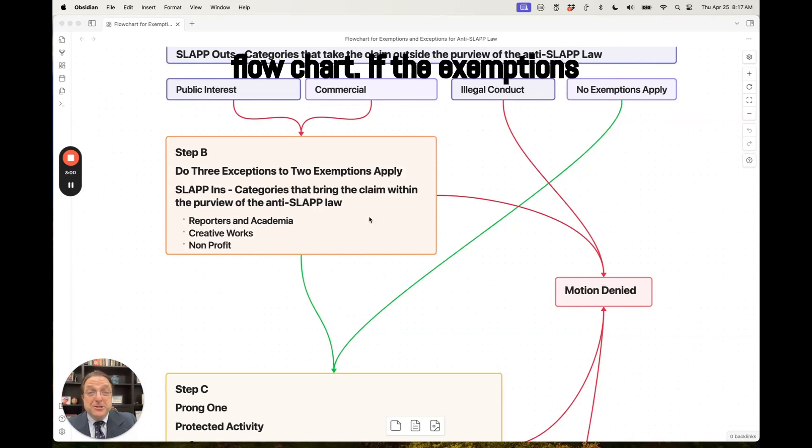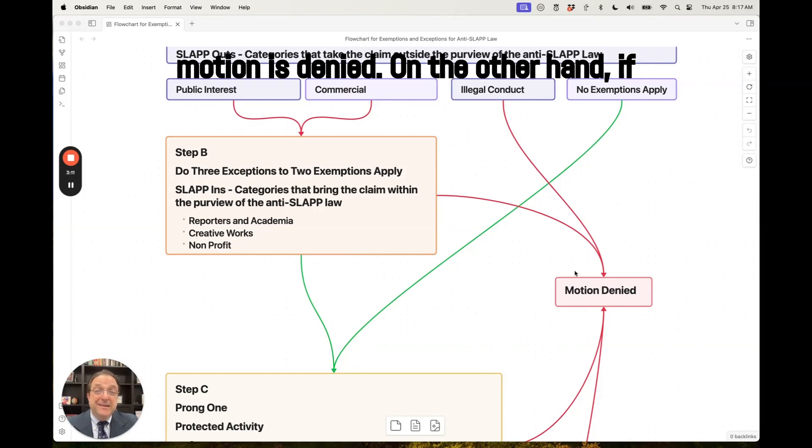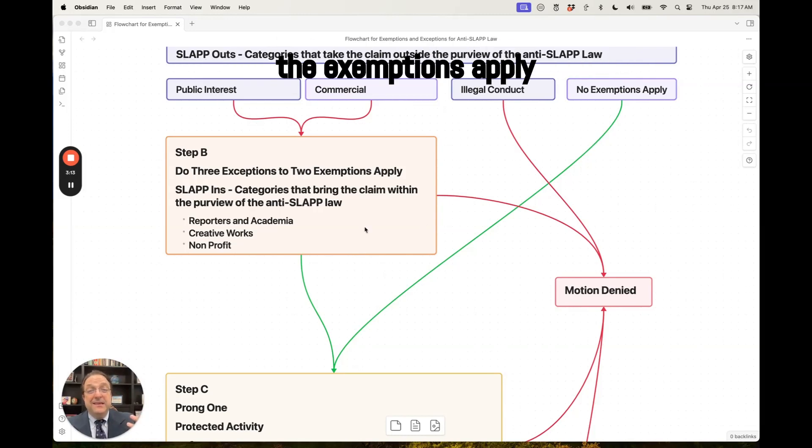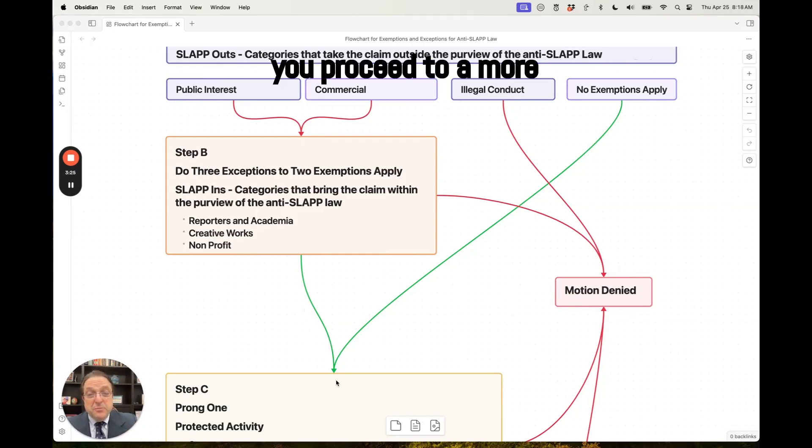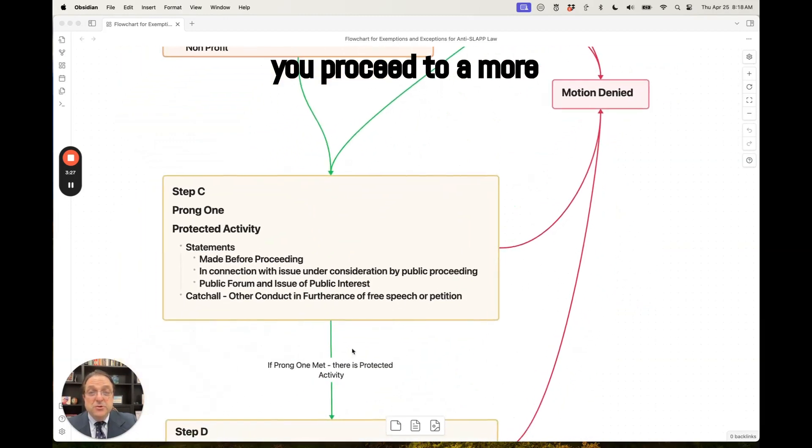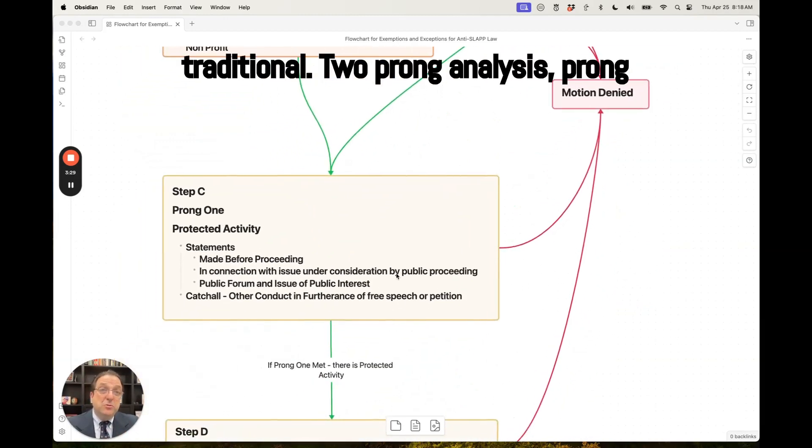So again, look at my flow chart. If the exemptions apply and there is no exception, the motion is denied. On the other hand, if the exemptions apply as to commercial speech or public interest litigation, but one of these three exceptions apply, then you proceed to a more traditional two-pronged analysis.